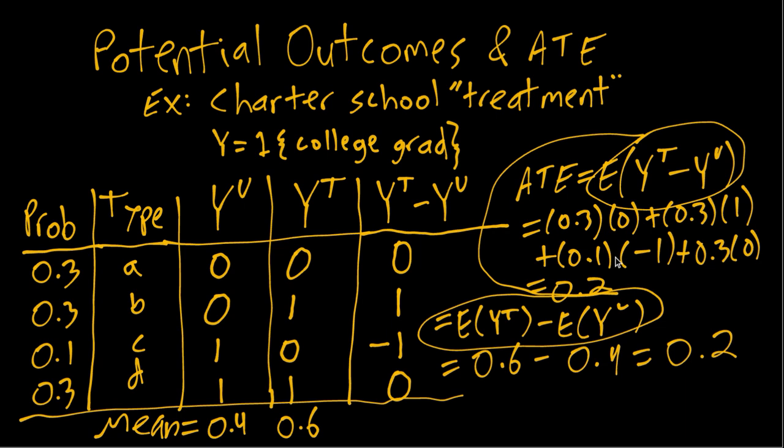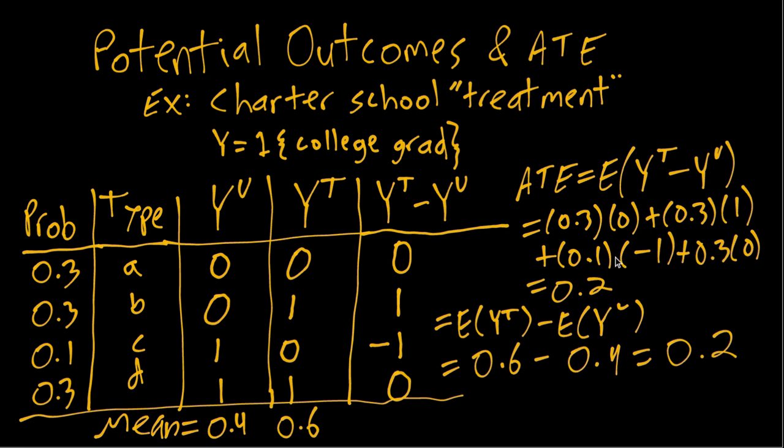In practice you don't need to recompute things both ways since they're always equal to each other, but it's nice to see a concrete example for reassurance that this equality actually holds. Regardless of which way you compute it, we get an average treatment effect of 0.2 in this charter school example.